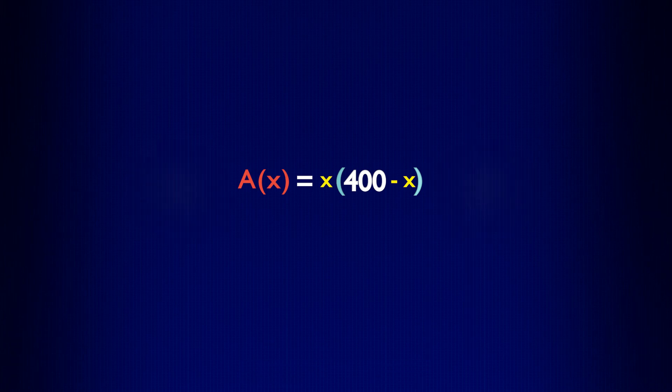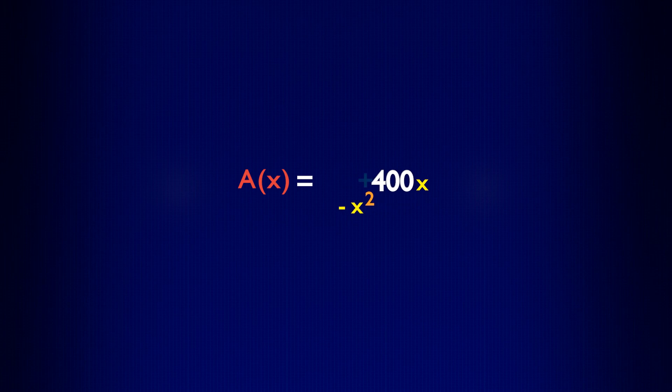Two things to keep in mind. It doesn't matter which side you label with the variable x, the width or the length. The function only requires you to know the dimension of one side. Also, this function is designed only to produce the area of a rectangle with a perimeter of 800 feet.